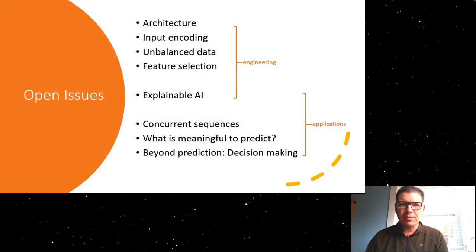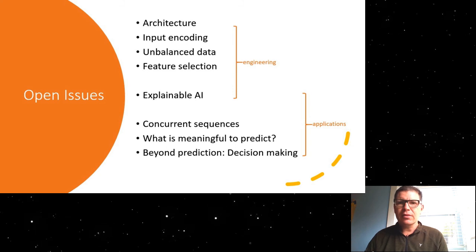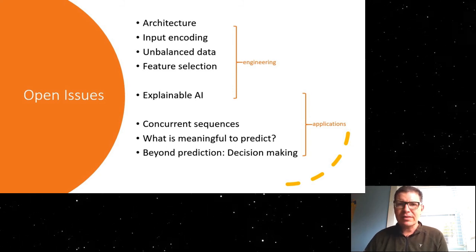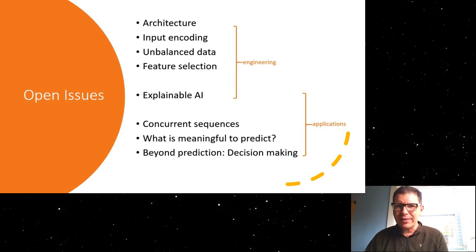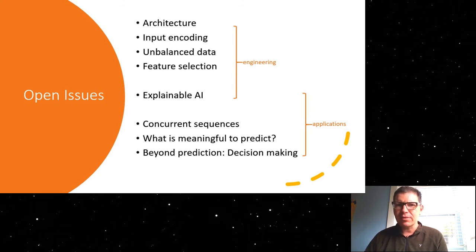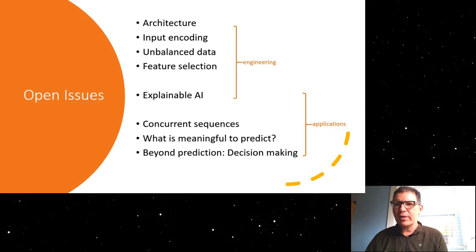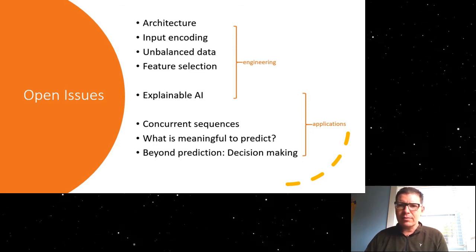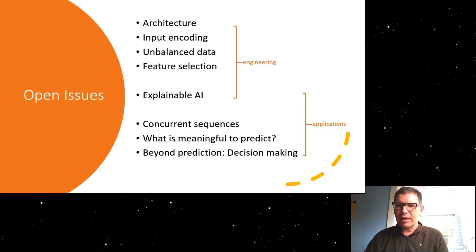Now, there are some open issues in this area of research, so from the engineering perspective, we might ask, okay, what's the best architecture? What's the best input encoding? How do we deal with unbalanced data? What are the relevant features in an event log or in a trace, in particular when it comes to application data?